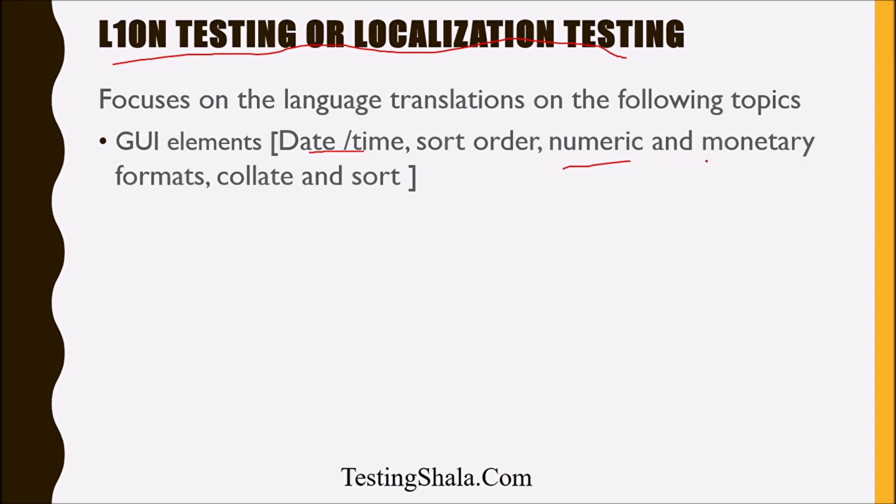In the same way, monetary formats vary by locale. For example, India uses Rupees, the US uses USD (US Dollars), Japan has a different currency, and China has a different currency. Your application should be able to handle those fields in the appropriate manner. You should not show Indian currency to a Japanese user when they open the UI in their respective country or language.